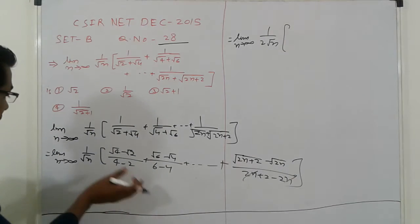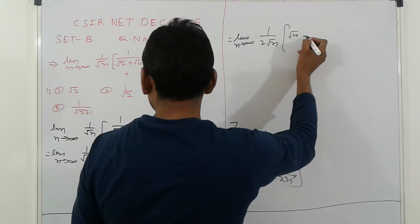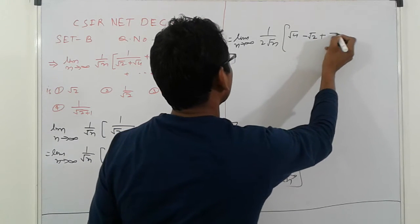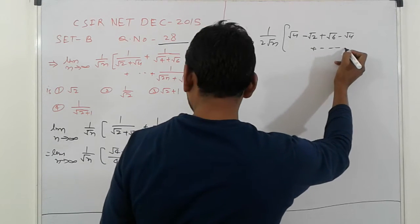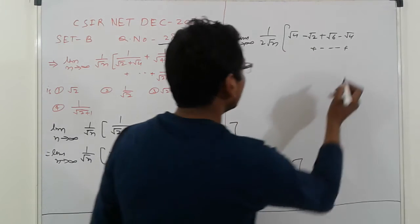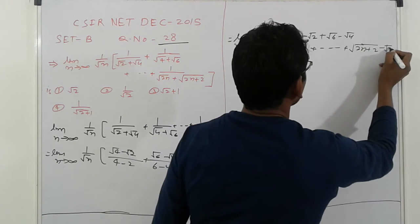So 2 everywhere, 2 common. So here we get under root 4 minus under root 2 plus under root 6 minus under root 4. Here, under root 2n plus 2 minus root 2n.